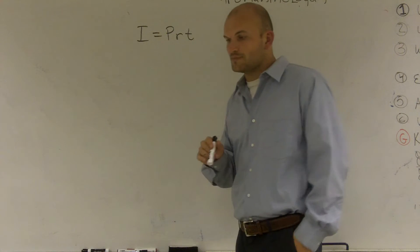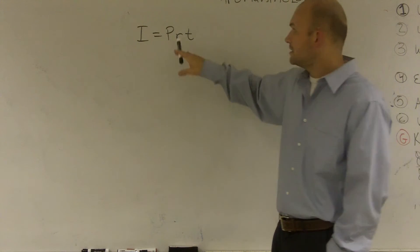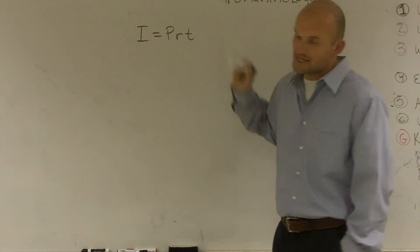So this is a formula for simple interest, where simple interest equals your principal, which is your initial amount, times your rate, times the time in years.